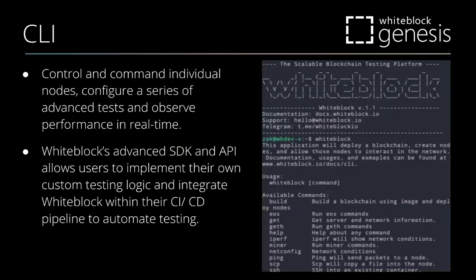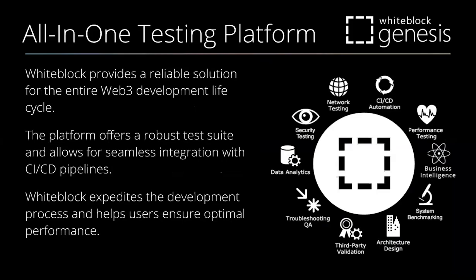We interface with developers today using a command line interface that lets you control individual nodes, configure a set of instances, and observe performance in real time. It also comes with a complete SDK and APIs so people can integrate it into Jenkins, CircleCI, Concourse, and other test frameworks that exist today. In summary, Whiteblock Genesis is the all-in-one testing platform for blockchain and distributed systems — very helpful for any Web3 application, whether you're a dapp developer, protocol developer, or managing a complex deployment with many moving pieces.